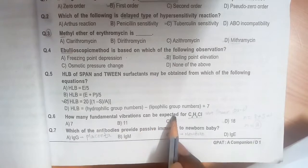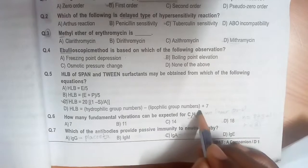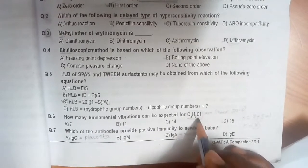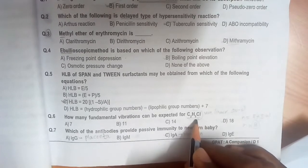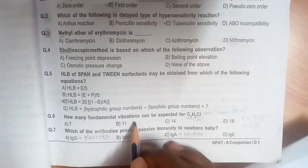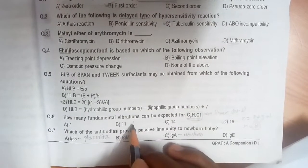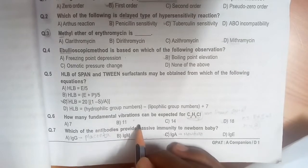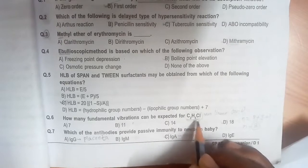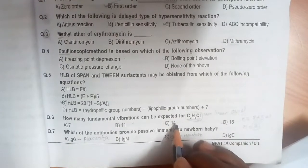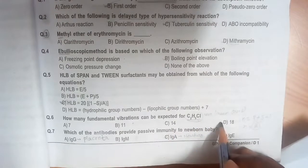Last question: How many fundamental vibrations can be expected for C2H5Cl? If you see the structure, it is a non-linear substance. For non-linear substances, the formula is 3n minus 6. If linear, 3n minus 5. Here n is the number of atoms: 2 plus 5 plus 1 equals 8. So 3 into 8 minus 6 equals 18 is the answer.